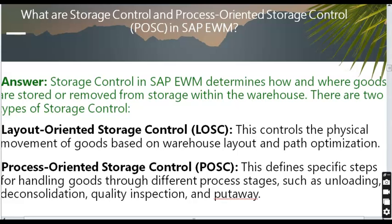What are storage control and process-oriented storage control in SAP EWM? Storage control in SAP EWM determines how and where goods are stored or removed within the warehouse. There are two types: layout-oriented storage control, which controls physical movement of goods based on warehouse layout and path optimization, and process-oriented storage control, which defines specific steps for handling goods through process stages such as unloading, deconsolidation, quality inspection, and put-away.